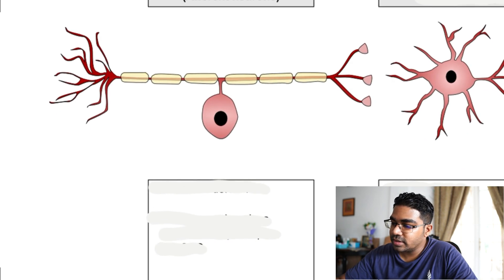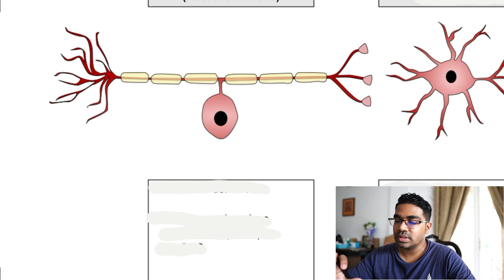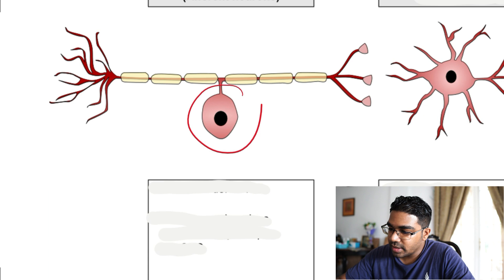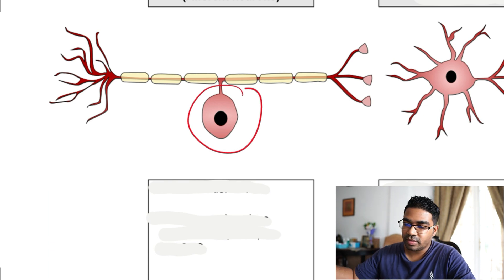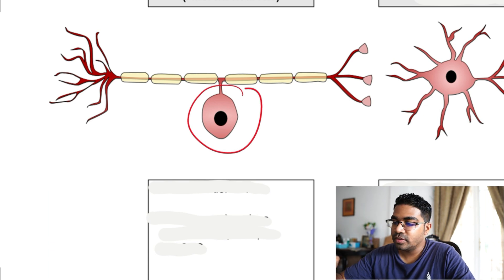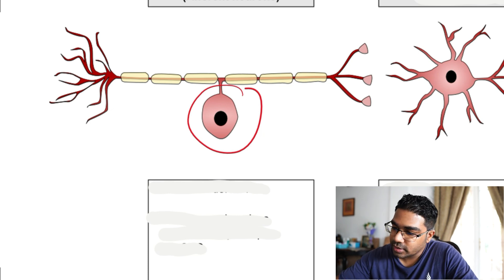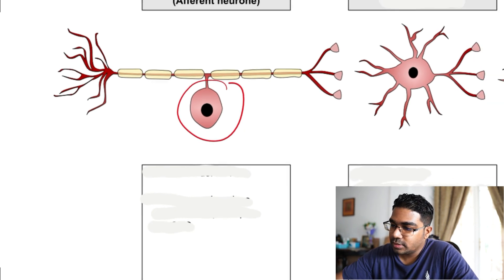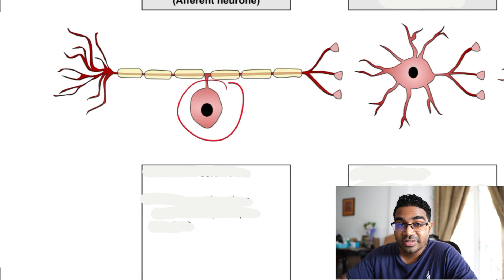The sensory neuron has a slightly different shape from the typical neuron studied earlier — the cell body lies in the middle. This is how you identify the sensory neuron from the rest: if you see the cell body in the middle, it is a sensory neuron.